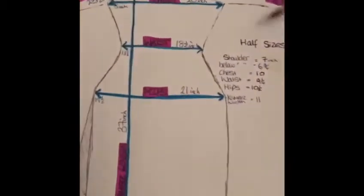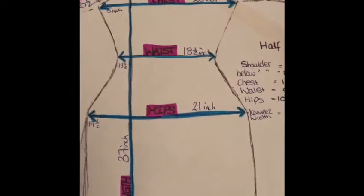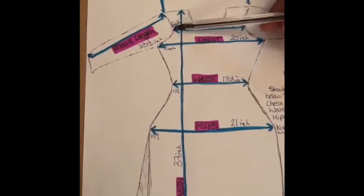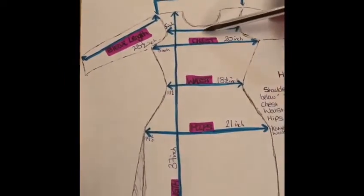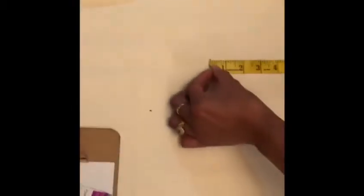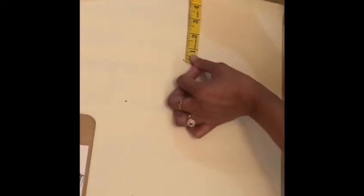The second thing we need to mark now is the area below the chest. We've halved it already, which is 6 and 3 quarters inches, and it comes down 5 inches. So we need to go 6 and 3 quarters this way and 5 inches down and mark it there.